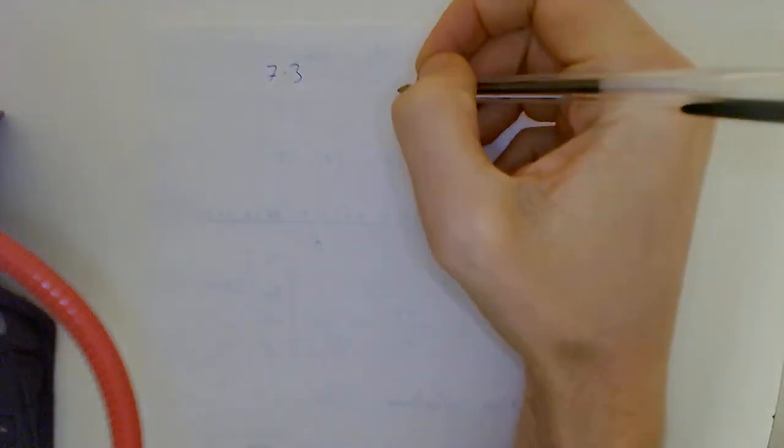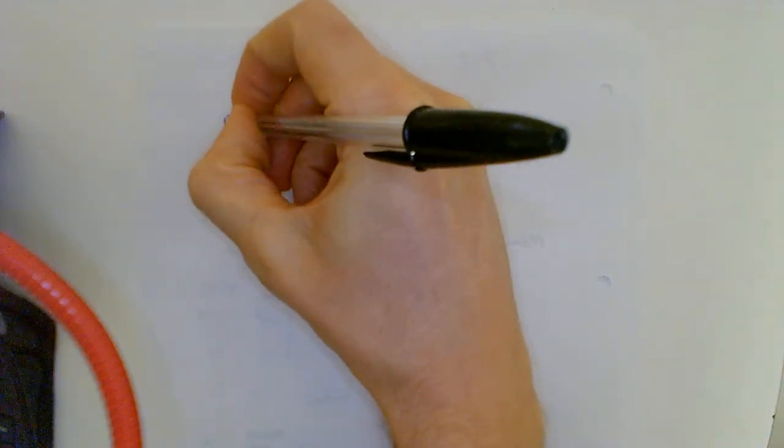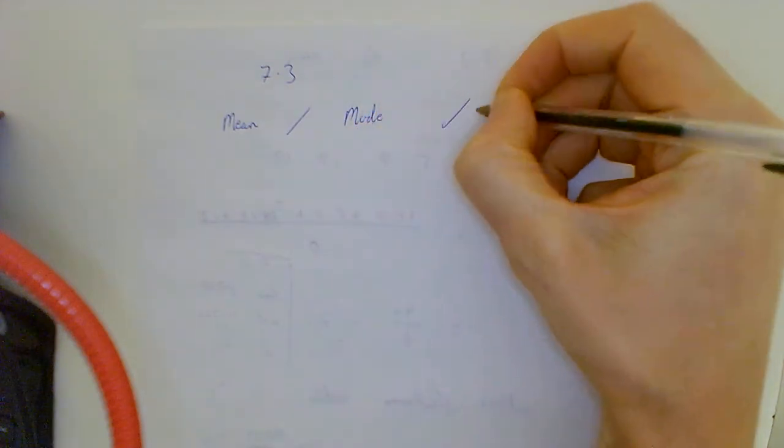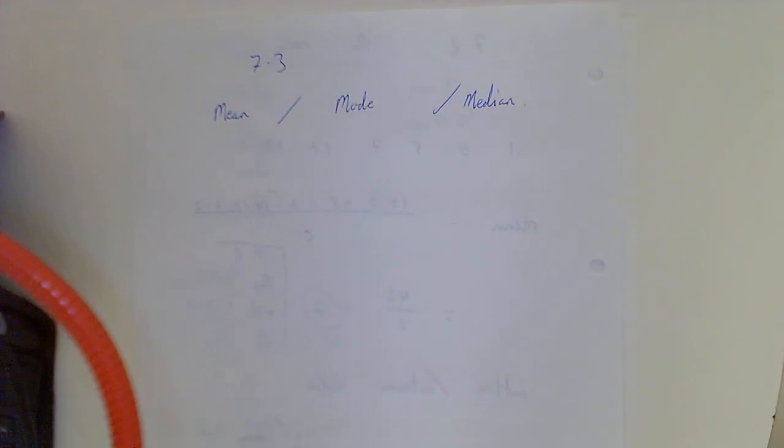7.3, which average to use. So basically what that means is, do we use the mean, the mode, or the median? Okay, I'm gonna make this as simple as possible for you guys. We now all know how to find the mean, the mode, and the median.